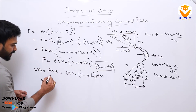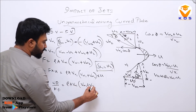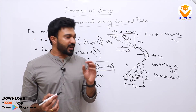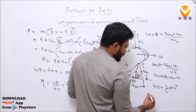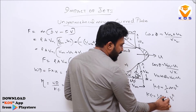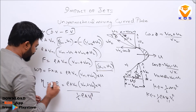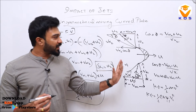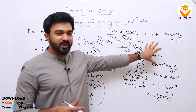Work done = F·U = ρAVr1(Vw1+Vw2)·U. Efficiency equals work done divided by kinetic energy input. Kinetic energy = ½ρAV1³. So efficiency = ρAVr1(Vw1+Vw2)·U divided by ½ρAV1³. This gives work done, force, and efficiency for the unsymmetrically curved moving blade using the velocity triangle.